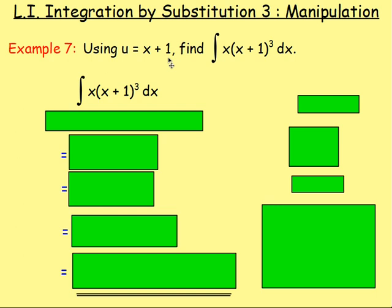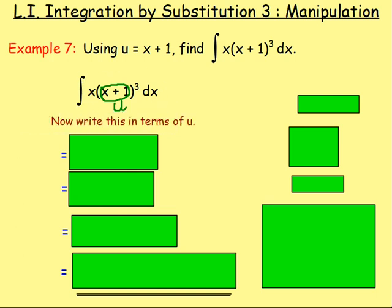Example 7: using u equals x plus 1, find the integral of x bracket x plus 1 cubed. We know from this that u is equal to x plus 1, so we would replace x plus 1 with u. So we would have x times u cubed times dx. But we would have to write this all in terms of u — we wouldn't leave it as x times u cubed dx.